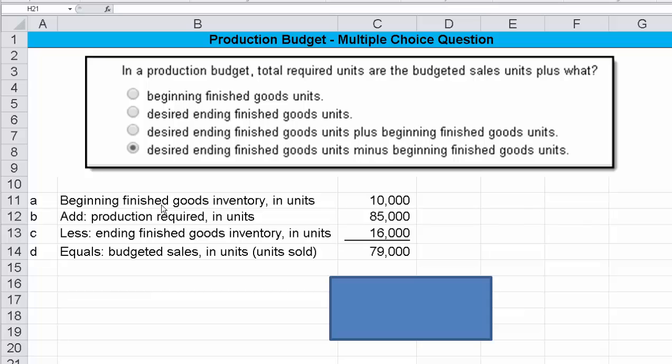and that would give you total available, which I'm not showing as a subtotal here. Then you would subtract out the ending finished goods in dollars, and you would come up with cost of goods sold.